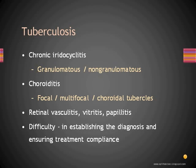The difficulty involved in tuberculosis uveitis is, first, establishing the diagnosis and, secondly, ensuring treatment compliance. If the patient already has extra-ocular tuberculosis, the diagnosis may be easier. If the patient has only findings in the eye, then ruling out or diagnosing tuberculosis is difficult. In any treatment of tuberculosis, a pulmonologist should be involved.